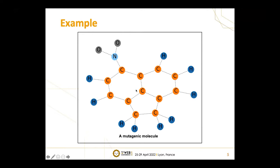This is a molecule taken from a chemical dataset, represented as a graph. The nodes are atoms and the edges are chemical bonds. This molecule is predicted to be mutagenic — meaning it is capable of inducing genetic mutations. People already know the true reason for this mutagenicity: it has the nitro binding structure, which is the nitrogen dioxide connected to the carbon ring.